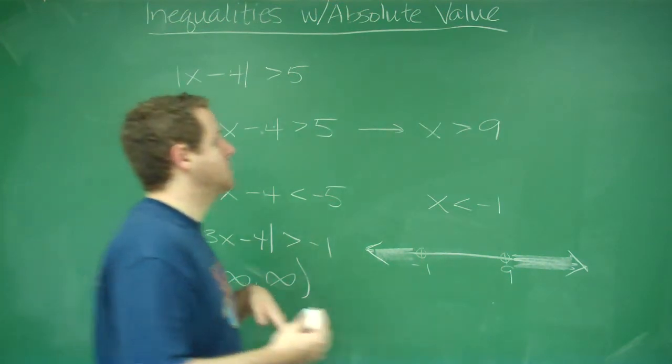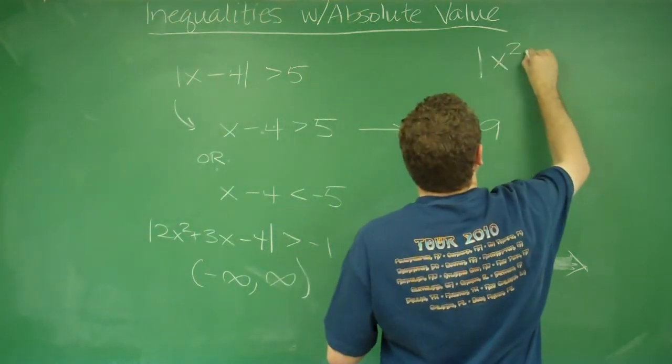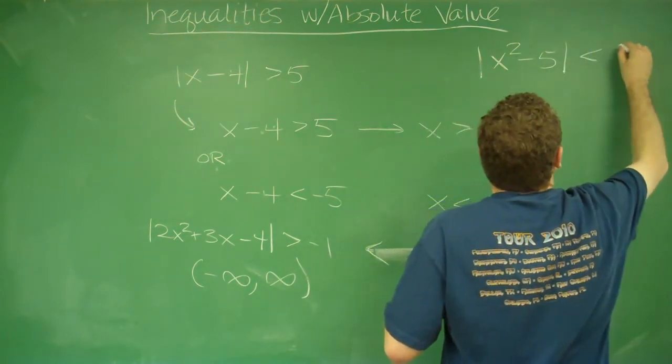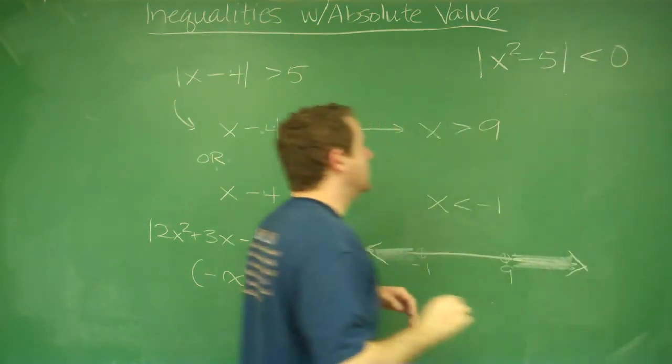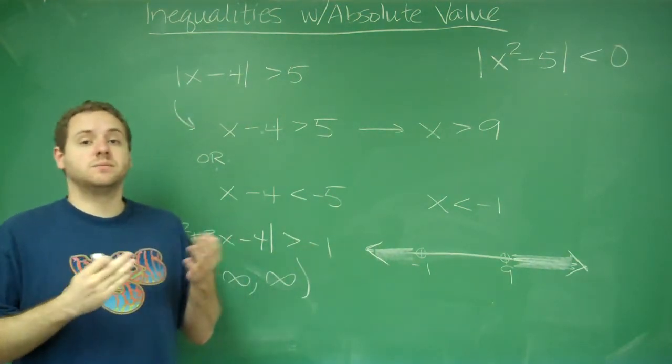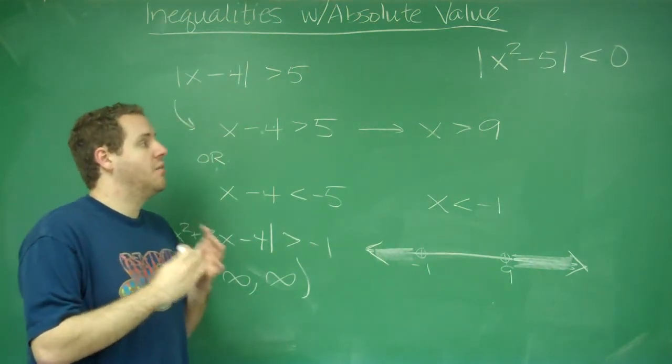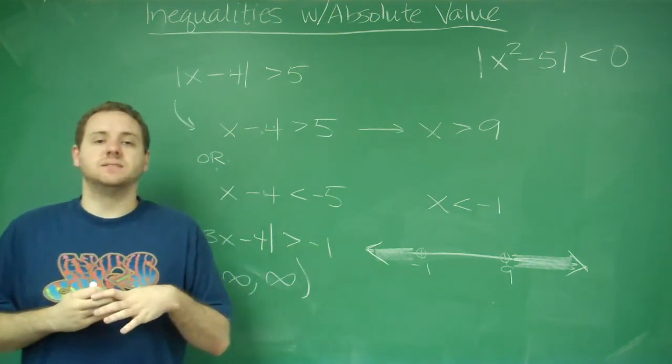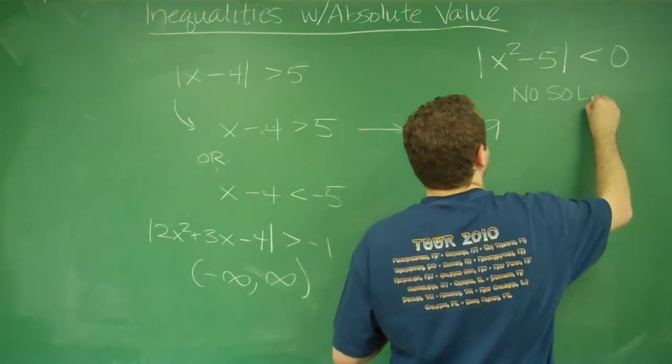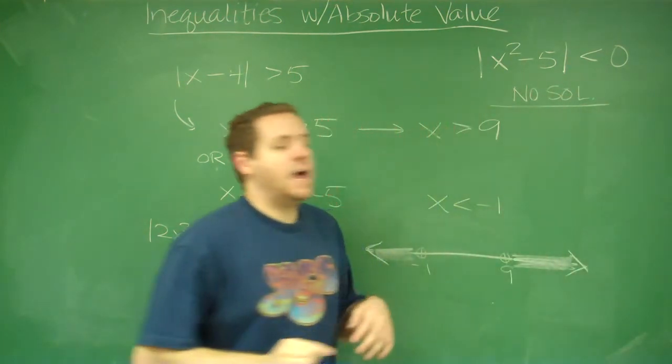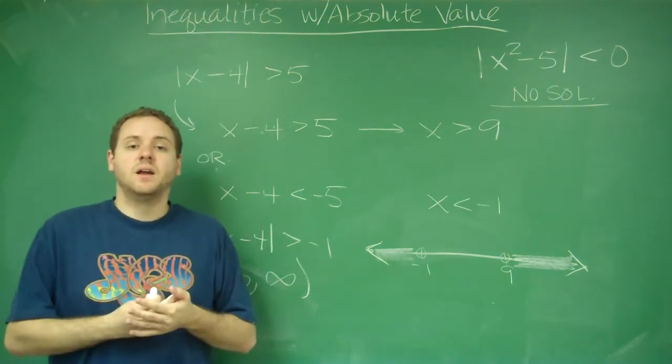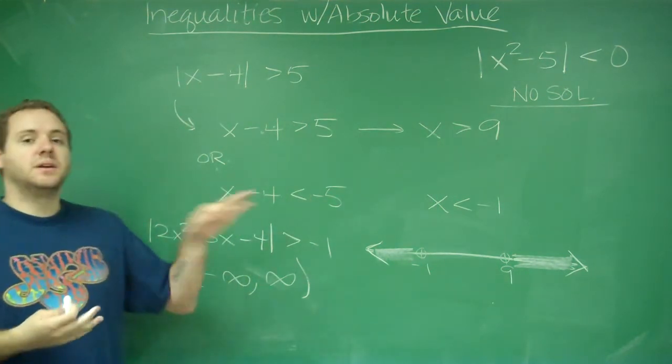Similarly, if you had something like this, is less than 0. Right away, you could say that that is impossible. Because the absolute value of anything cannot be less than 0. So you would have no solution to this. And you didn't have to break it down into its pieces and figure out anything. These you could do clearly just by looking at it.